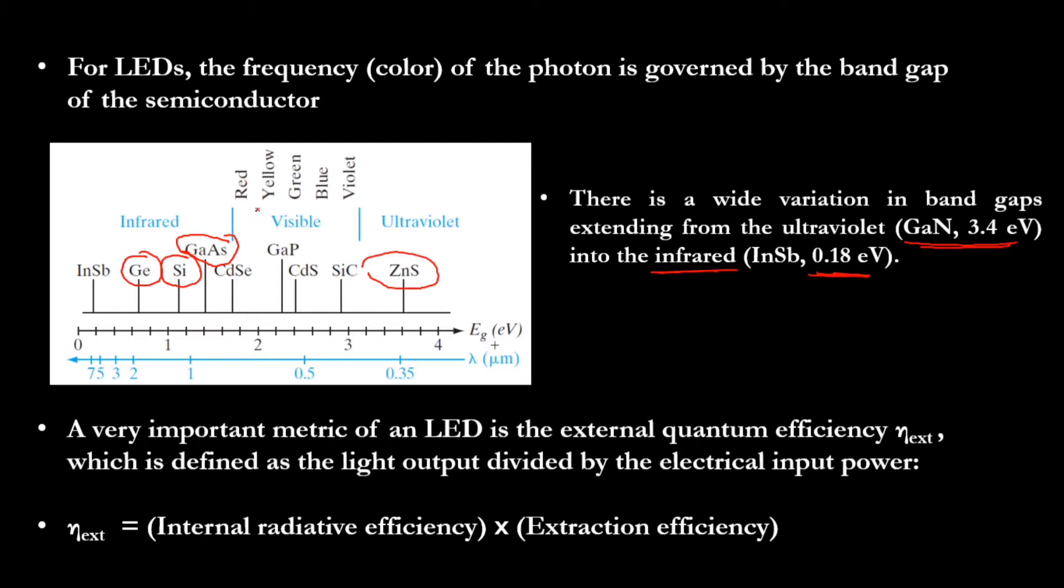A very important metric is quantum efficiency. This external quantum efficiency says how much electrical input power it is taking and how much light it is giving back. The ratio of that basically gives the efficiency and it can be calculated using this expression.